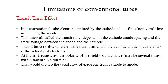Consider the next limitation: transit time effect. In a conventional tube, electrons emitted by the cathode take a finite, non-zero time to reach the anode. This interval, called the transit time, depends on the cathode-anode spacing and the static voltage between them. Transit time tau can be written as d divided by v, where d is the cathode-anode spacing and v is the velocity of electrons. At higher frequencies, the polarity of the field would change, and for even higher frequencies it may change several times within one transit time duration, disturbing the usual flow of electrons from cathode to anode. This is the transit time effect.